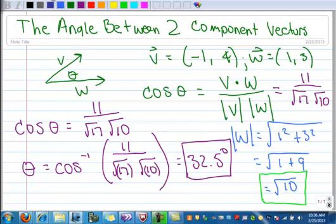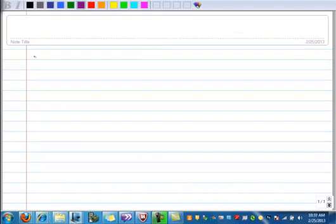I've got a second example for you, and it's kind of a special case. The procedure is the same, so let's start with vector V in IJ form. So it's a little different.